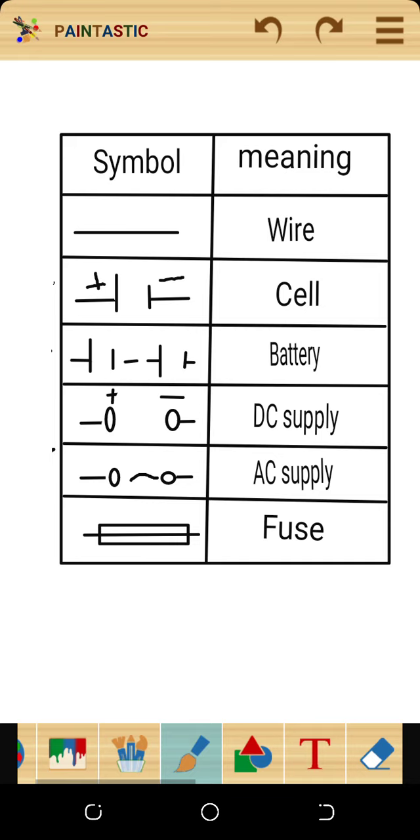This video covers some of the symbols that are used in an electric circuit. The first symbol represents the connecting wire. The function of the connecting wire is to pass on electricity from one point to the other in an electric circuit.